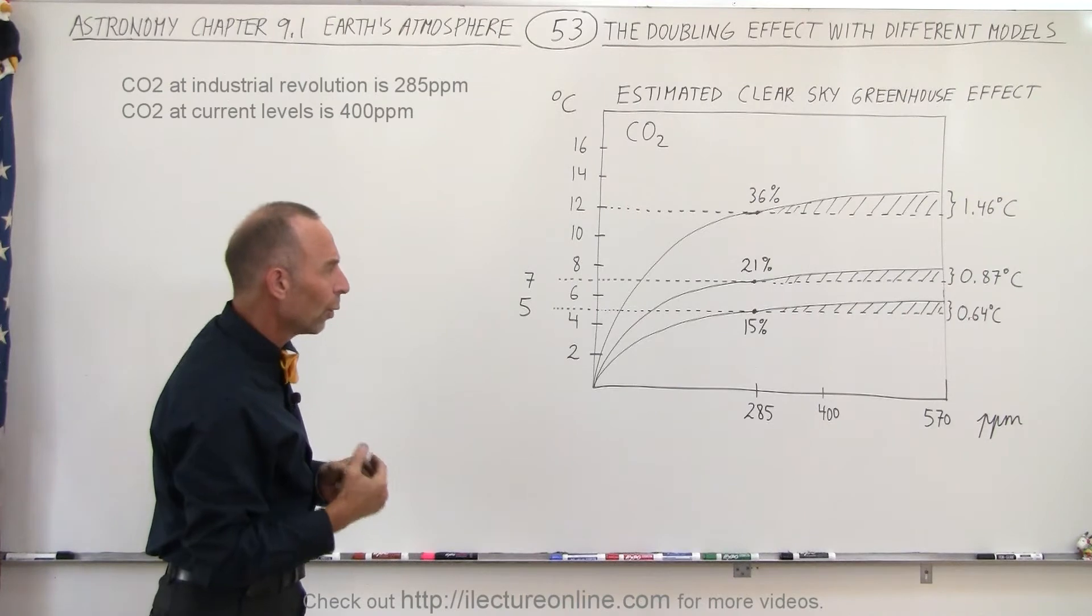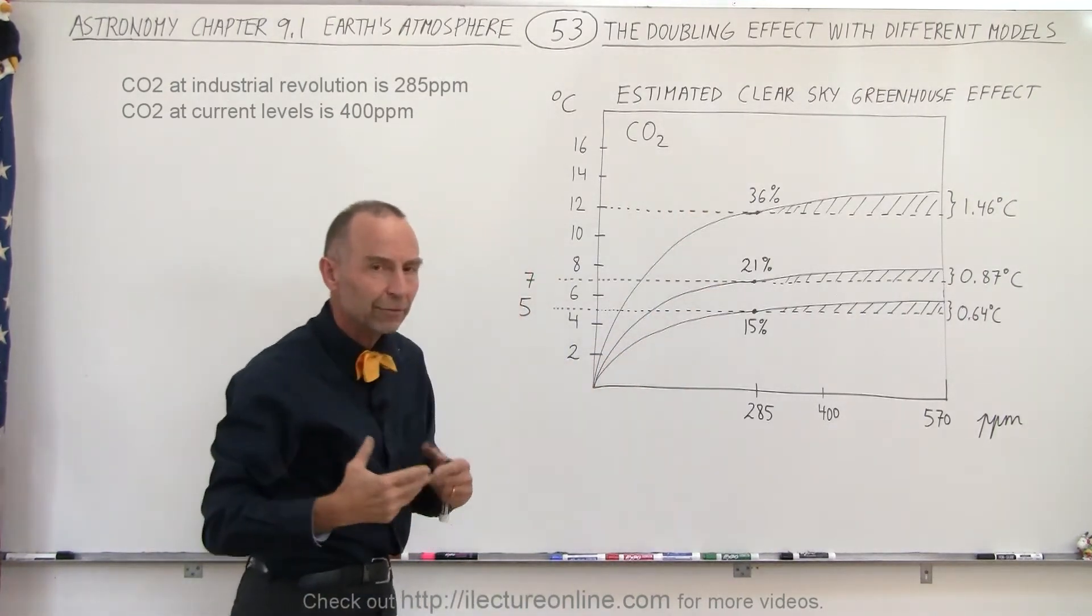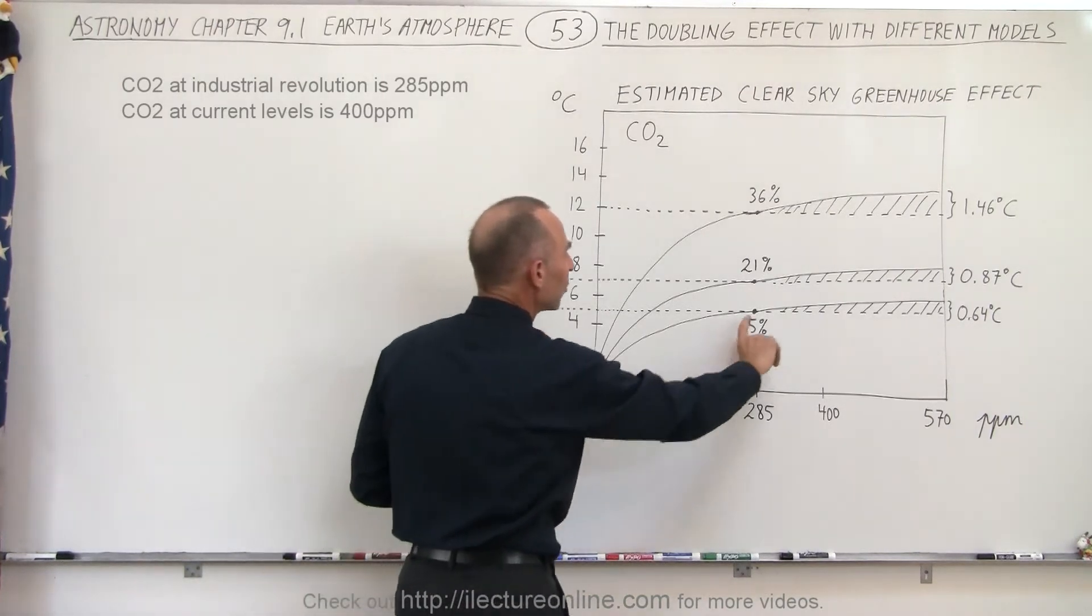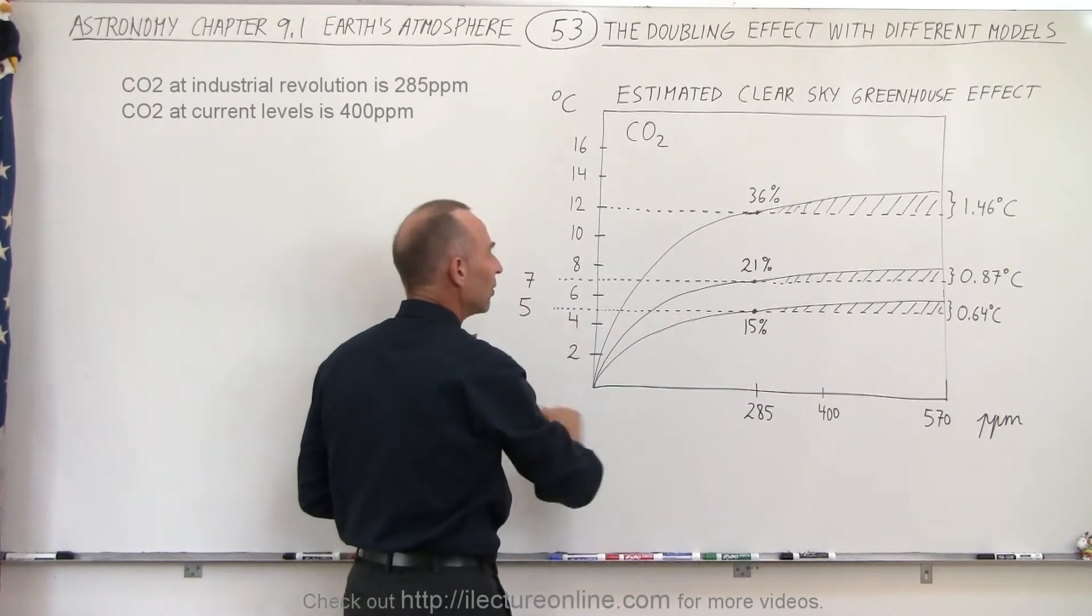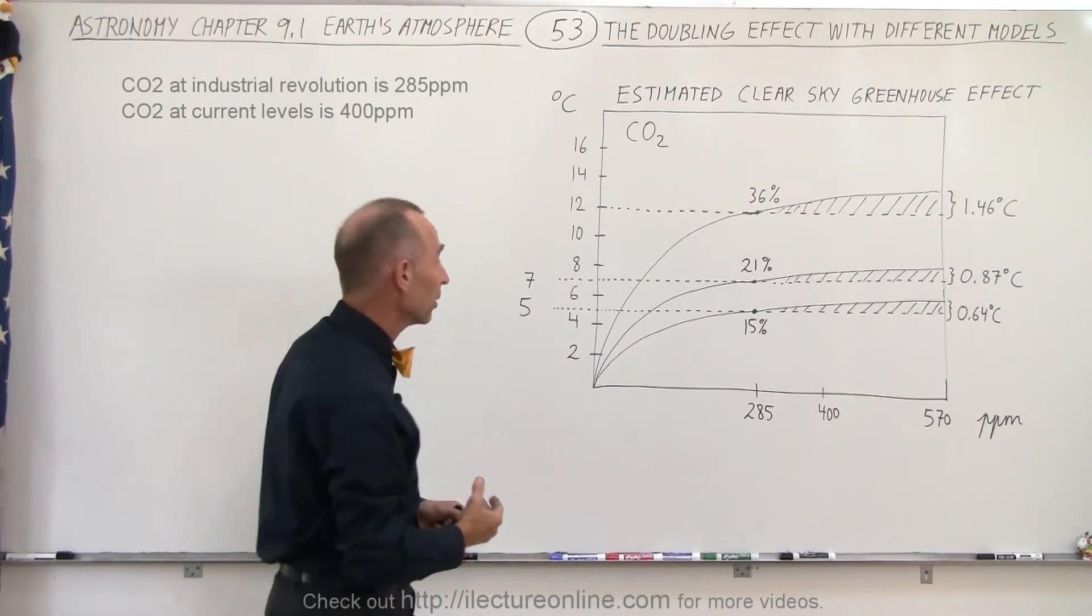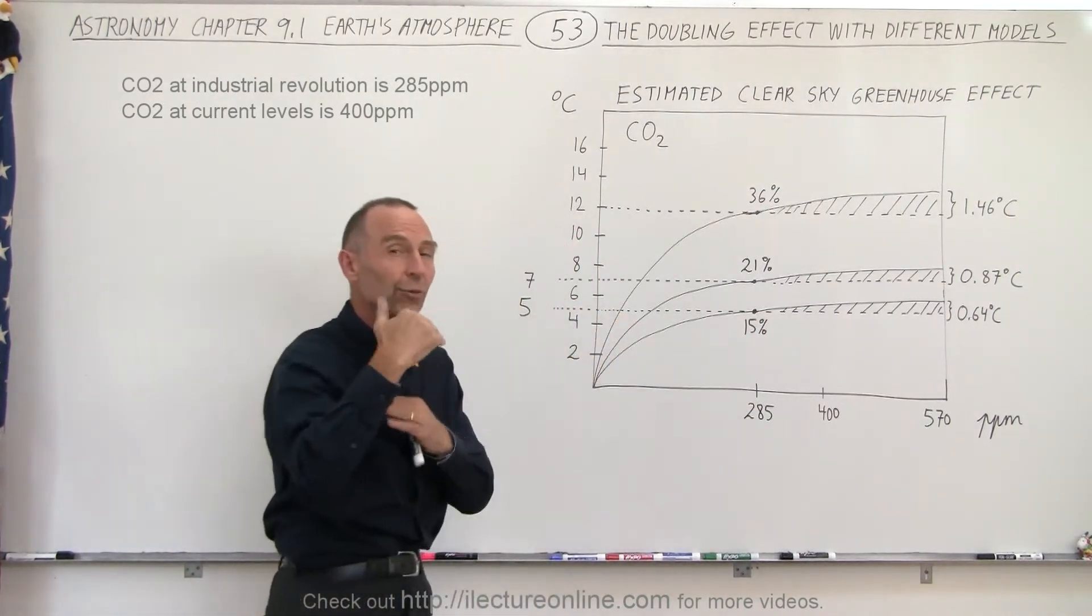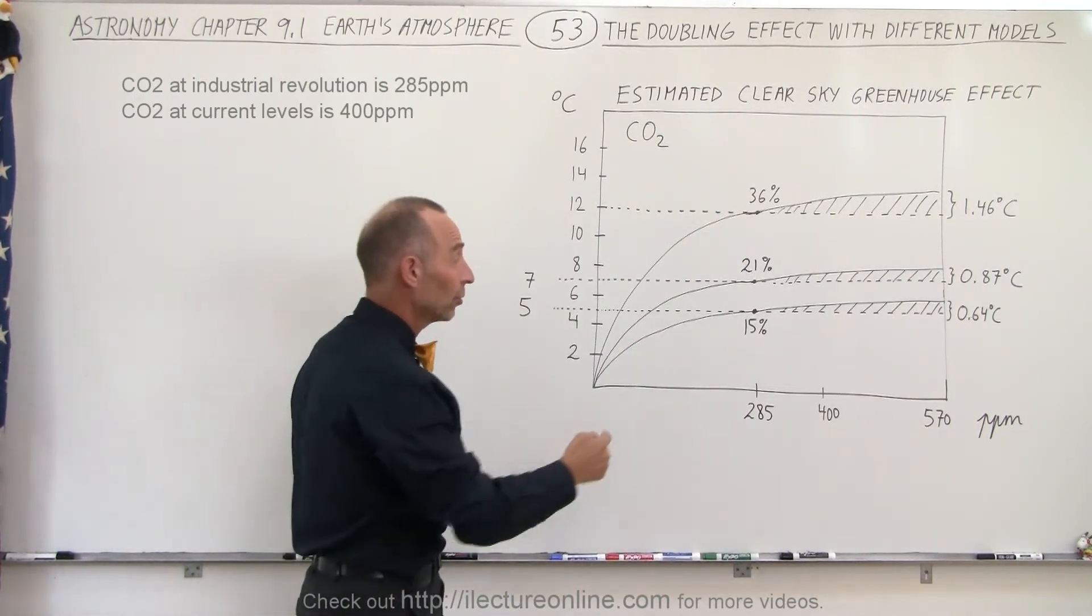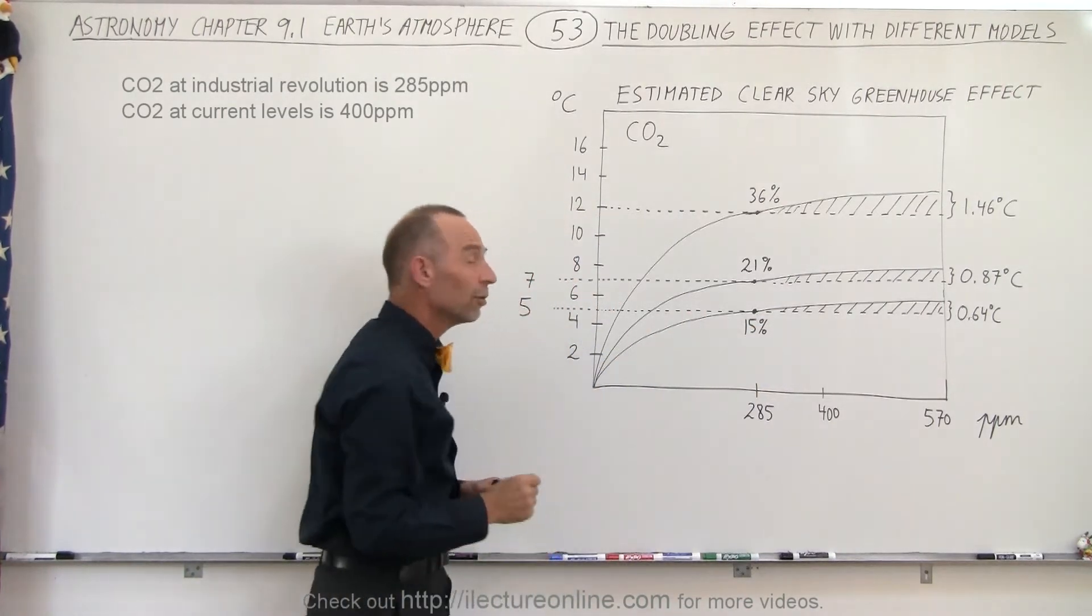Here we see with these three models—and you can find those models readily on the internet if you're interested—notice that they contribute for the first model a temperature increase of five degrees centigrade at the initial concentration of 285 parts per million. That's about 15% of the total of 33 degrees centigrade increase of the overall greenhouse effect, so they're contributing 15% of the total to carbon dioxide at these initial levels.